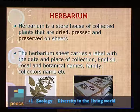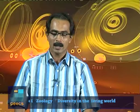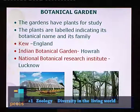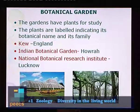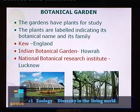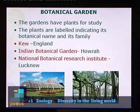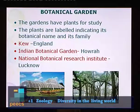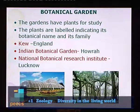Another taxonomical aid is the botanical garden. Plants are grown in this garden for study purposes and are labeled indicating the botanical name and family. One of the famous botanical gardens is Kew Garden in England. The Indian Botanical Garden is situated in Howrah, West Bengal, and the National Botanical Research Institute is in Lucknow — both are important botanical gardens in India.